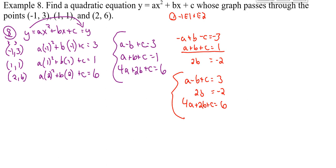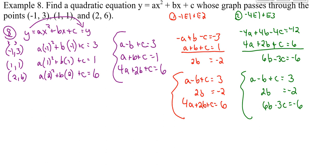And then I'm going to take e1 times negative 4 and add it to e3. And when I did that, I get 6b minus 3c equals negative 6. I'm going to leave the first equation, leave the second one, and replace that third one. And then I'm going to take e2 times negative 3 and add it to e3.